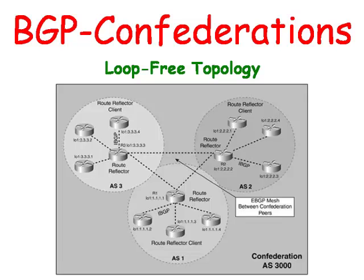Here we have an example of a hierarchical system where autonomous system 300 is broken up into three confederations. The routers in the three confederations are connected to each other using route reflectors, thus creating a logical full mesh between all the routers in autonomous system 3000. This type of structure is useful when dealing with thousands of routers.